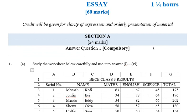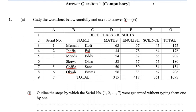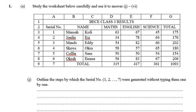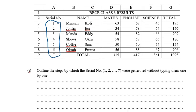Now let's get straight into it. Number one: we have a table with some figures and writings, and we have to answer questions on that diagram. Part (a) asks: find the steps by which serial numbers 1 to 7 were generated without typing them one by one. In other words, how can we generate all those numbers without manually typing 1, 2, 3, 4, 5, 6, 7? It is very simple.